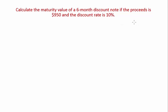Hello everybody, welcome to this video on examples regarding the principal calculation of simple discount. Let's start with this example: calculate the maturity value of a six-month discount note if the proceeds is $950 and the discount rate is 10%.